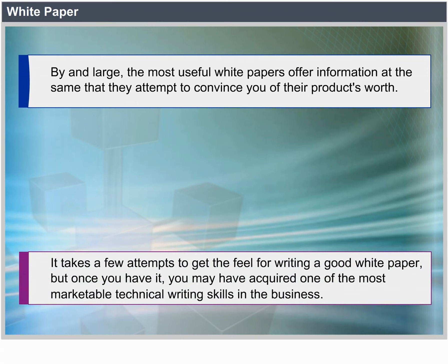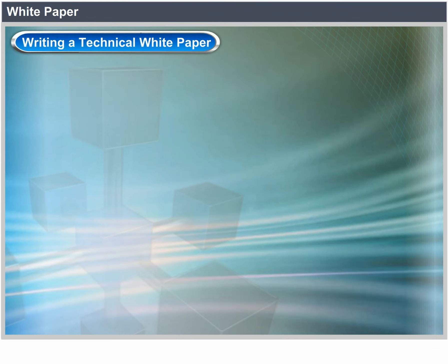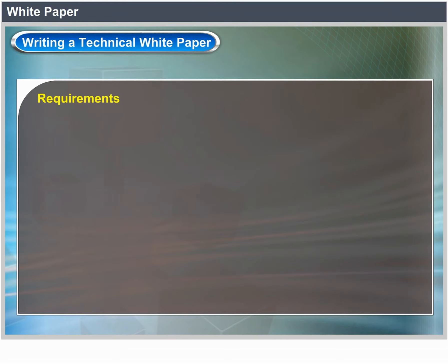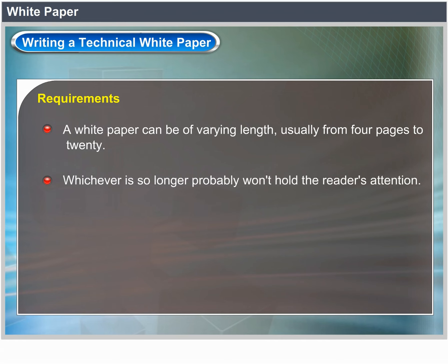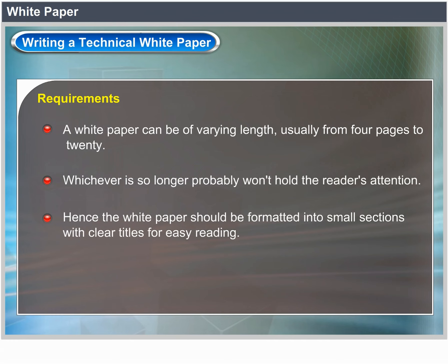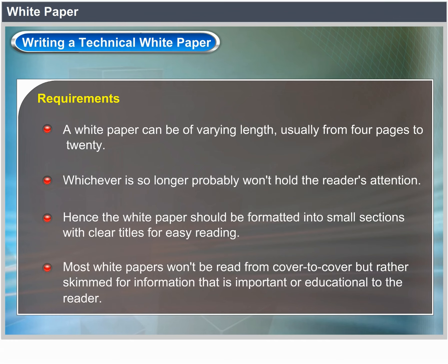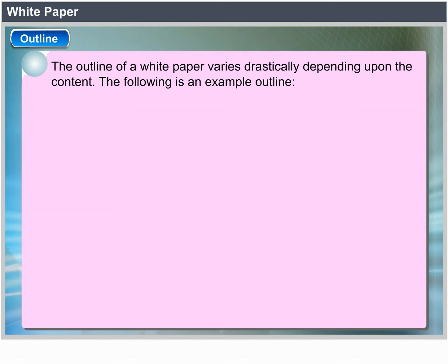Writing a technical white paper. Requirements: A white paper can be of varying length, usually from 4 pages to 20 — anything longer probably won't hold the reader's attention. The white paper should be formatted into small sections with clear titles for each section. Most white papers won't be read from cover to cover, but rather skimmed for important information. The outline of a white paper varies drastically depending upon the content.